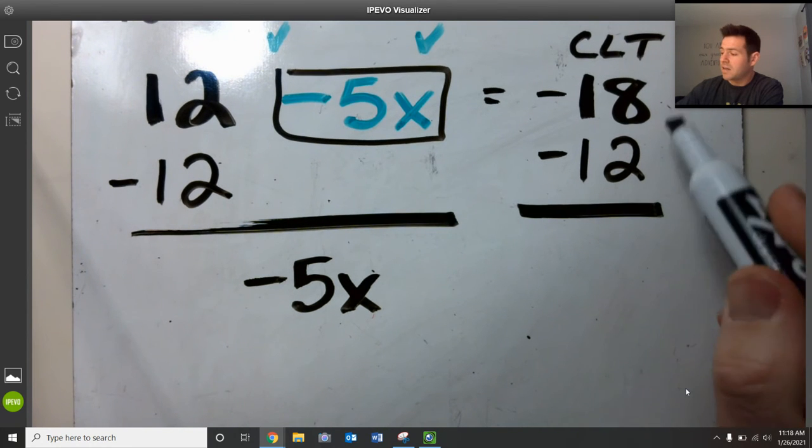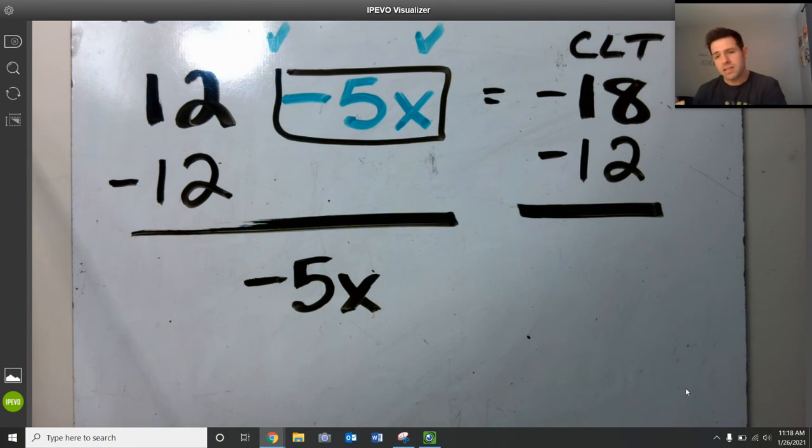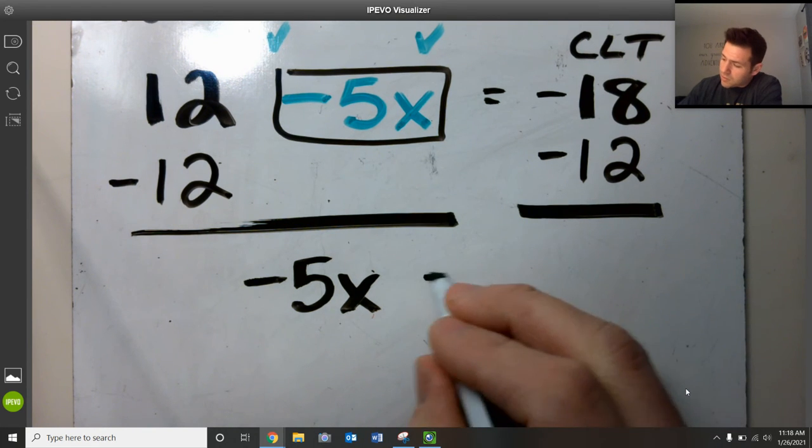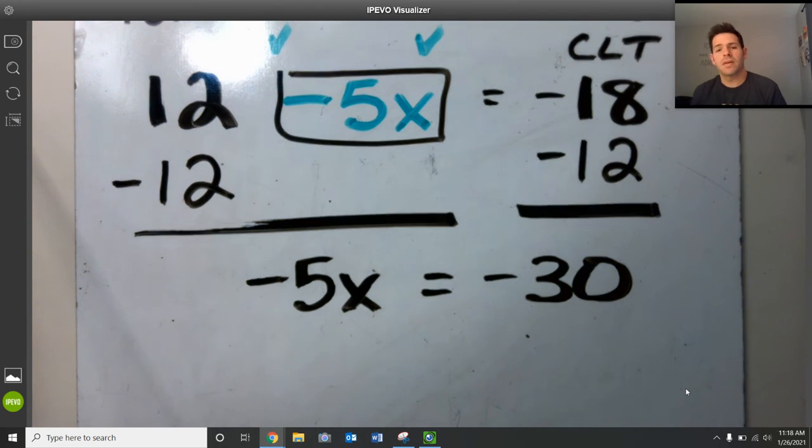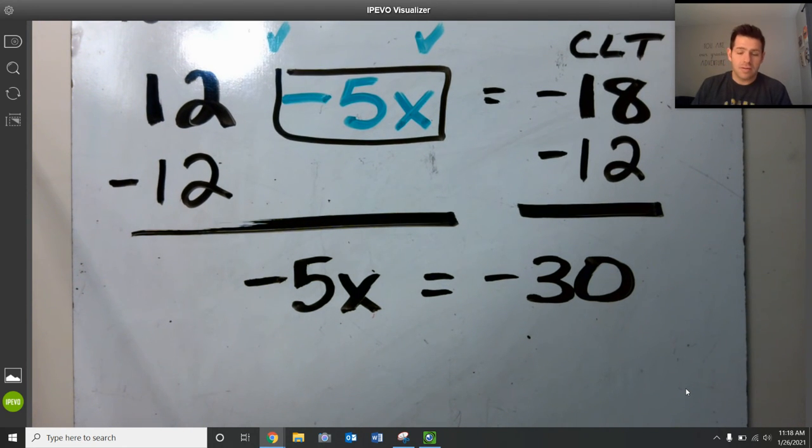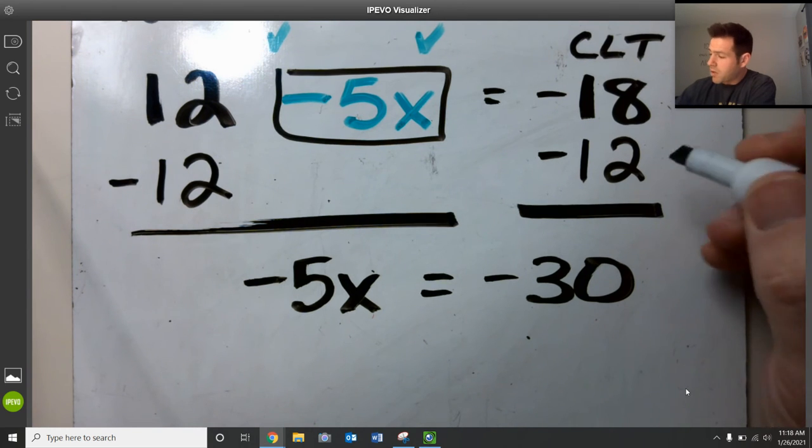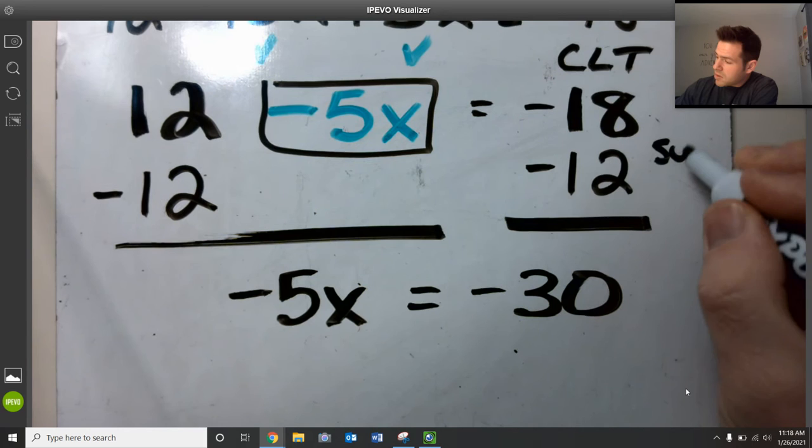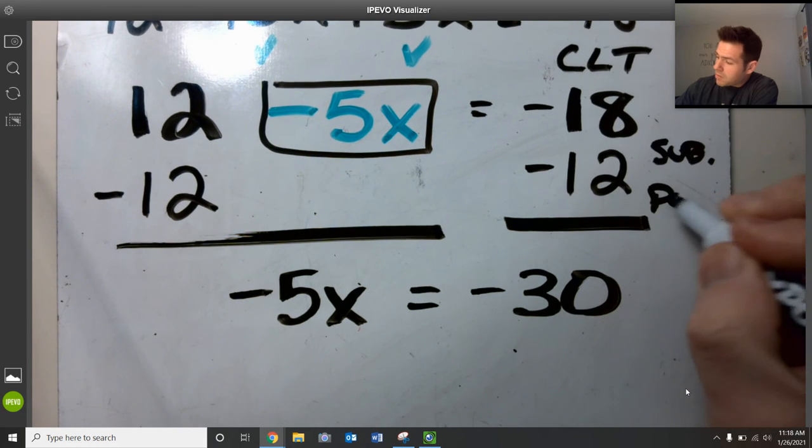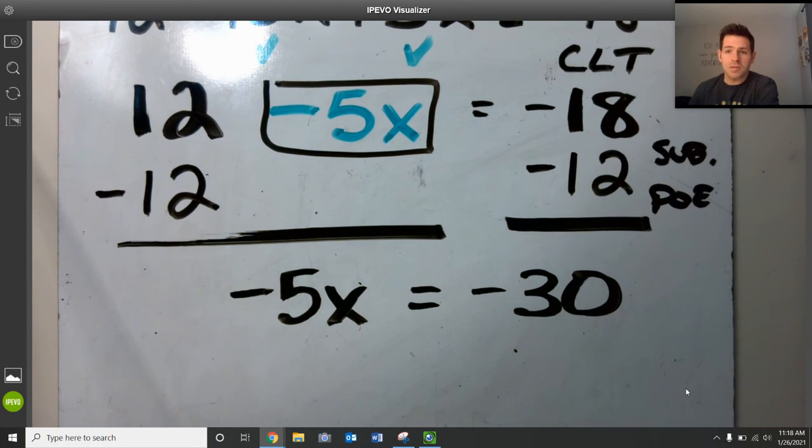On the right side, I have negative 18 minus 12. That's 18 negatives and 12 more negatives, which would make a total of 30 negatives. And in that step, we used the subtraction property of equality. So we'll make a quick note of that over here. Subtraction property of equality. We subtracted 12 to both sides.